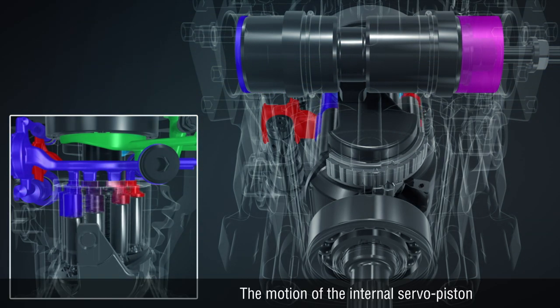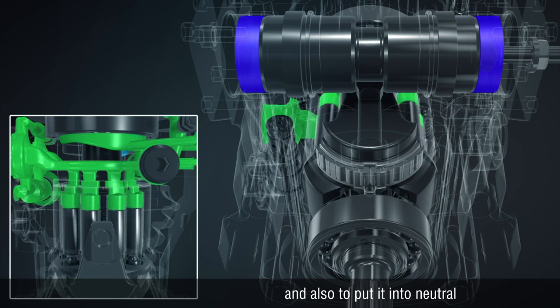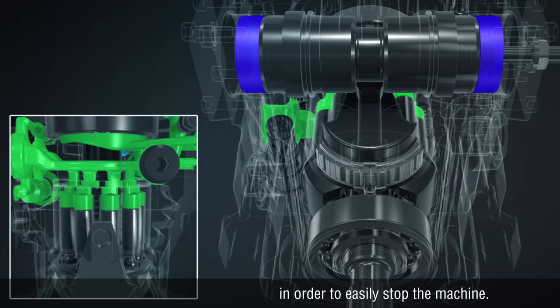The motion of the internal servo piston allows the pump to function in two directions, and also to put it into neutral in order to easily stop the machine.